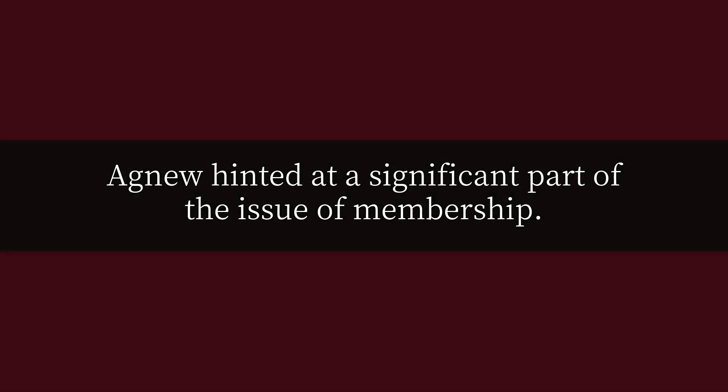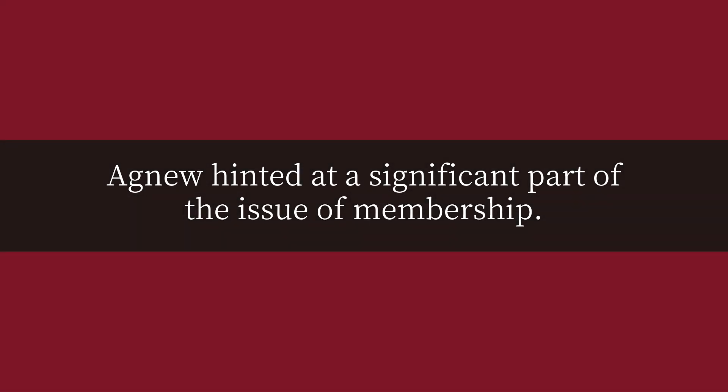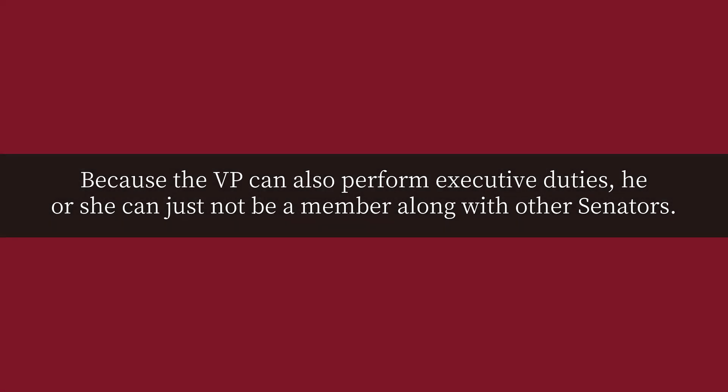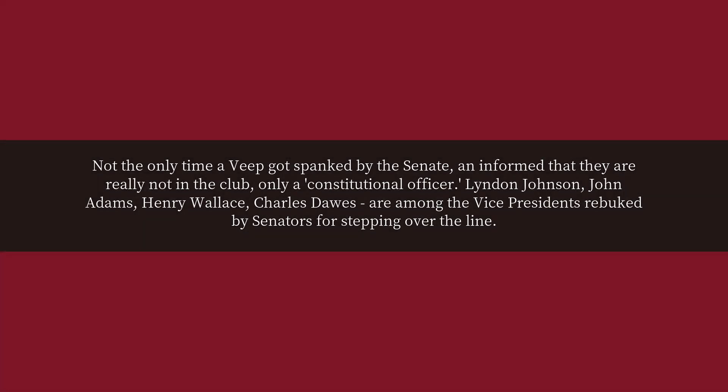Agnew hinted at a significant part of the issue of membership. Because the VP can also perform executive duties, he or she simply cannot be a member along with other senators. This was not the only time a VP got rebuked by the Senate and informed that they are really not in the club, only a constitutional officer. Lyndon Johnson, John Adams, Henry Wallace, and Charles Curtis are among the vice presidents rebuked by senators for stepping over the line.